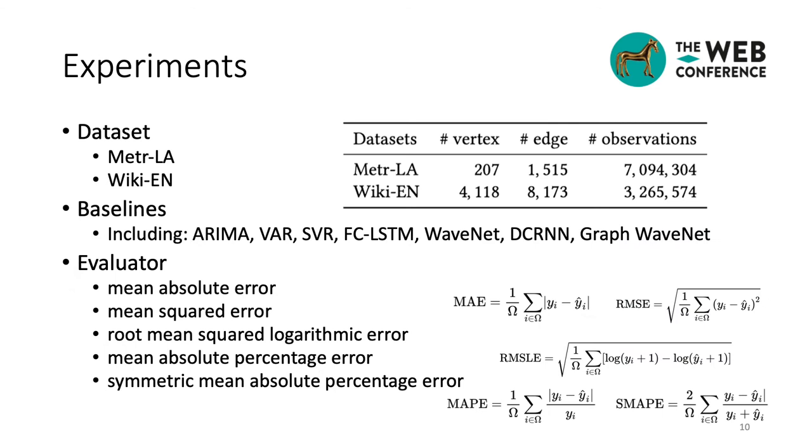Now, let me report our experimental settings, results, and analysis. To test and verify the REST framework, we have designed and conducted a collection of experiments on real-world datasets Metropolitan Los Angeles, which records traffic time series of Los Angeles Highway, and Wikipedia English, which records web traffic of Wikipedia entries. This table shows the statistics of both datasets.